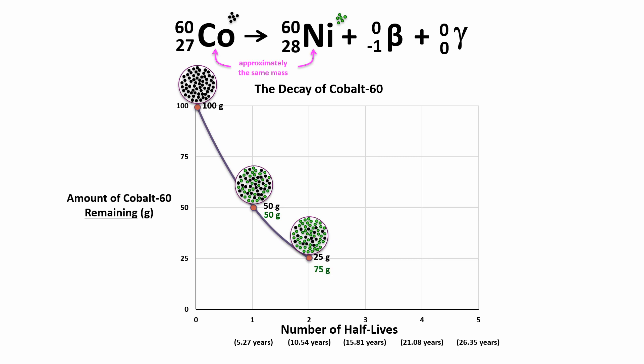It's tempting to think that if half have decayed after the first 5.27 years, the other half should decay in the next 5.27 years, but it doesn't work that way.